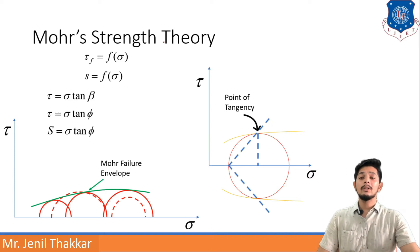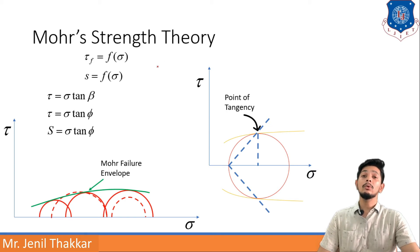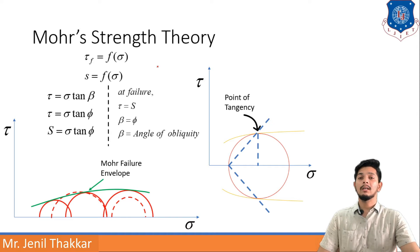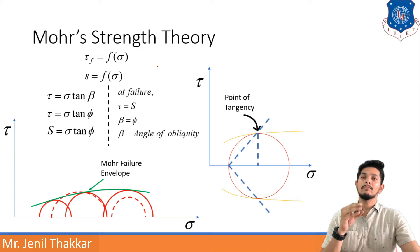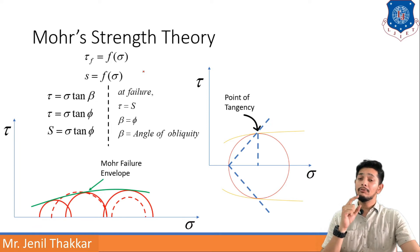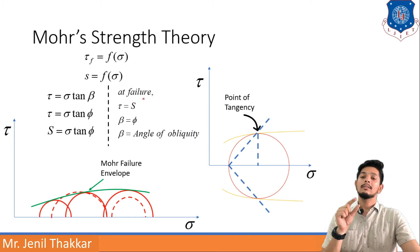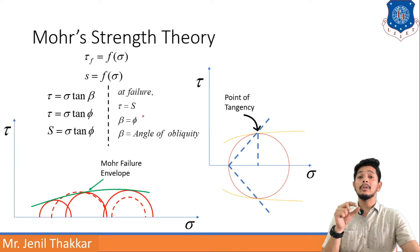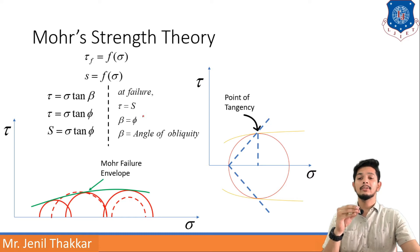We can write τ = σ·tan(β), where β is the angle with the resultant, as seen in the previous video on Mohr's circle. At the time of failure, τ will be maximum, representing the shear strength of soil. At failure, β is written as φ, known as the angle of obliquity. So τ = σ·tan(φ), and S, the shear strength of soil, is equal to σ·tan(φ).